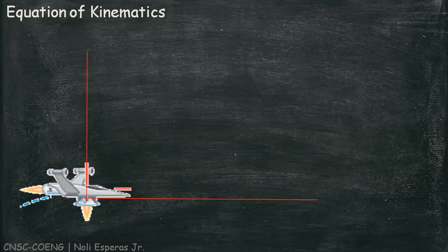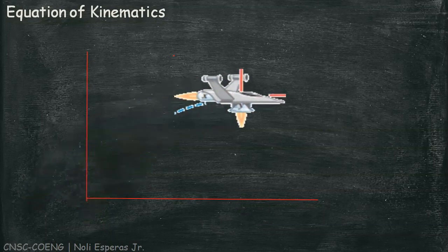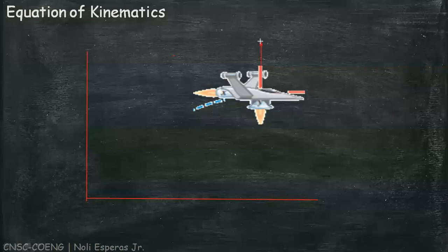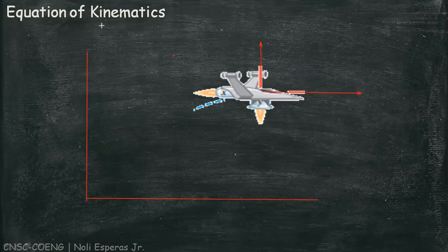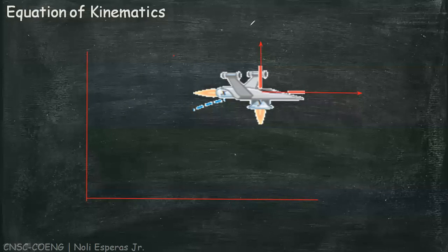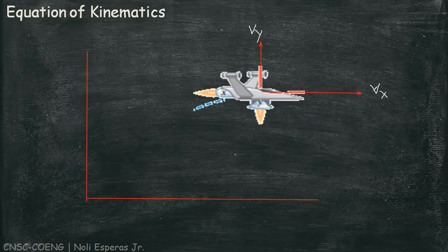If both engines of the spacecraft are firing at the same time, the resulting motion takes place in part along the x-axis and in part along the y-axis. The thrust of each engine gives the vehicle a corresponding acceleration component.